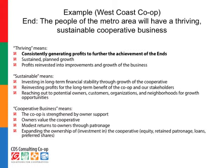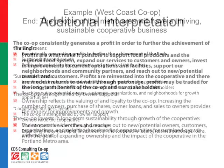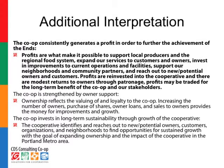Then she went on to define sustainable and ultimately cooperative business. There were additional interpretations included that became part of the strategic plan. The co-op consistently generates a profit in order to further the achievement of the ends — here there's an explanation of how she's thinking about this particular interpretation. Profits are what make it possible to support local producers and the regional food system, expanded services to customers and owners, invest in improvements, and so on. What she's doing is sharing her thinking about profitability and how it relates to the projects from this end.